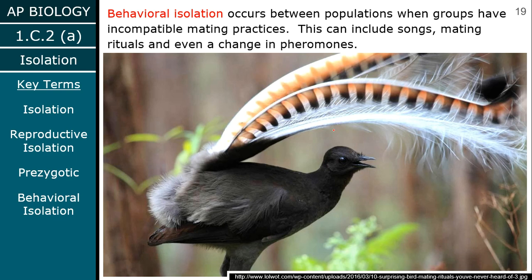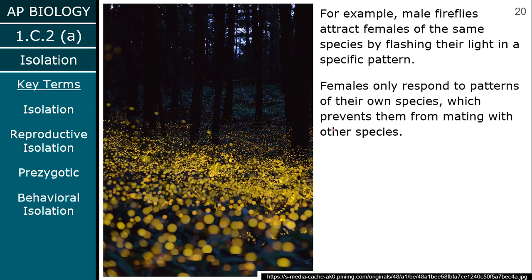How you respond to pheromones refers to behavior. For example, male fireflies attract females of their species by flashing a very specific pattern of light. To us it looks the same unless we're intensely studying them, but to a female firefly, it has to be their specific pattern being flashed in order for her to be interested. If you're flashing the wrong pattern, she's just not going to be interested.